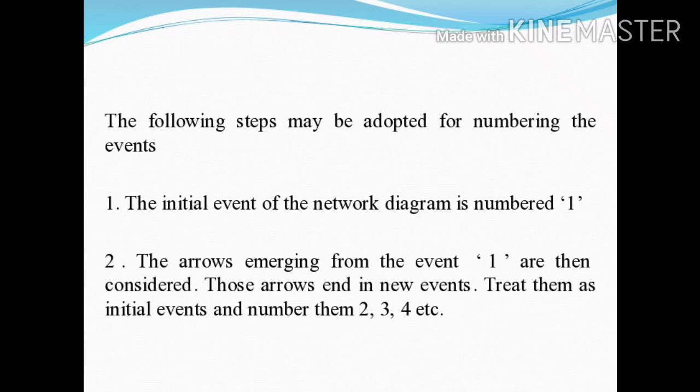The first step is that the initial event of the network diagram is numbered 1. The second step is that the arrows emerging from the initial event are then considered. Those arrows end in new events; treat them as initial events and number them 2, 3, 4, etc.